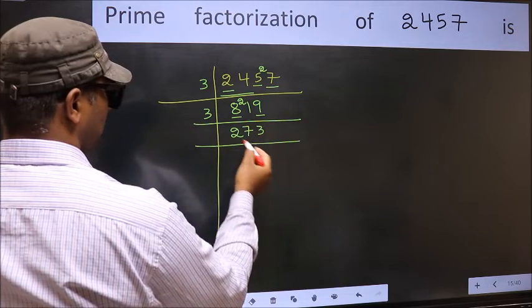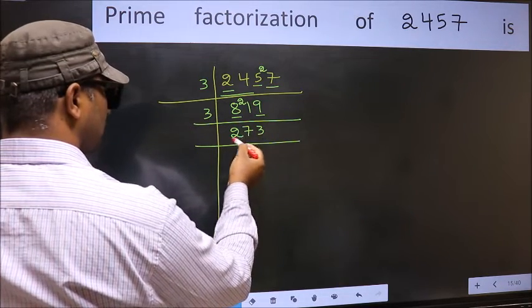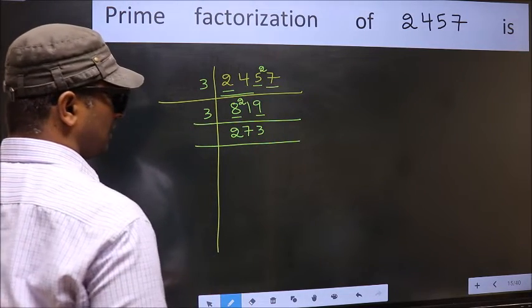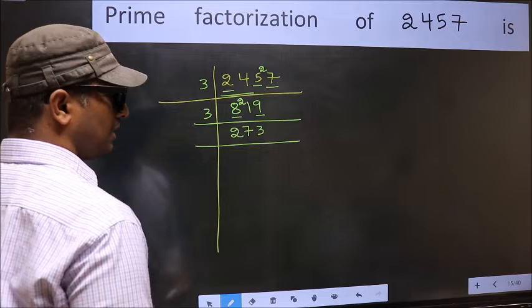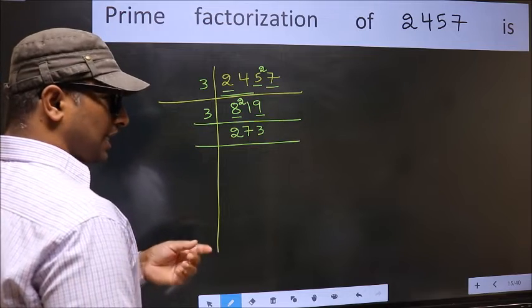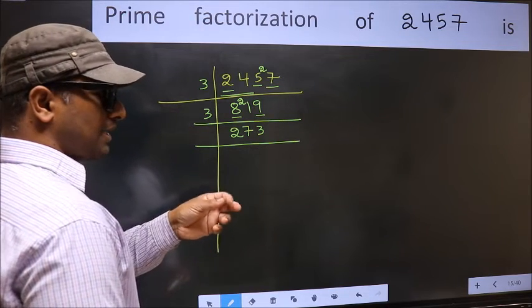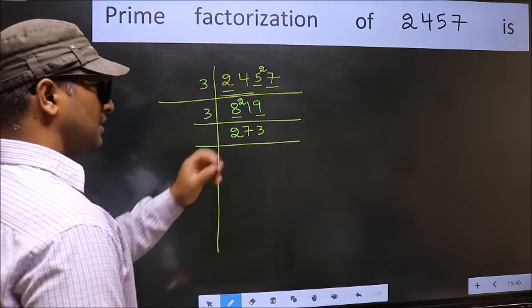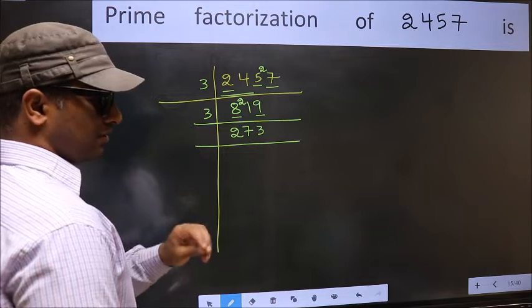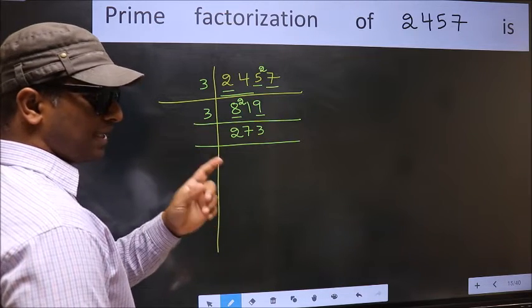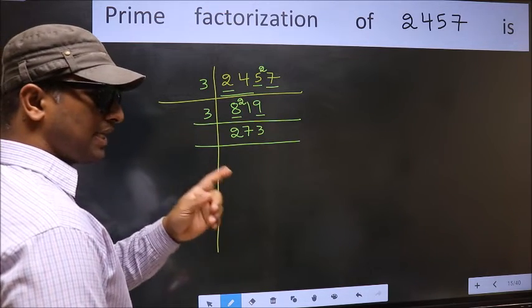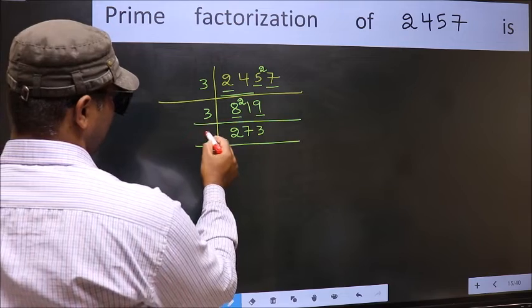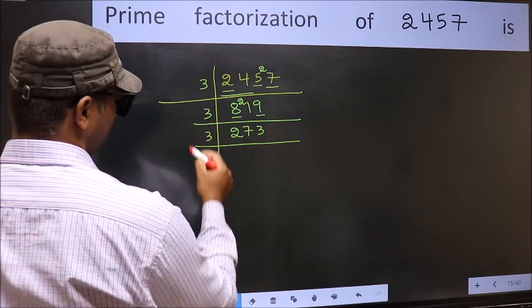Now to check whether 273 is divisible by 3 or not, we add the digits: 2 plus 7 plus 3. We get 12, and 12 is divisible by 3. So take 3 here.